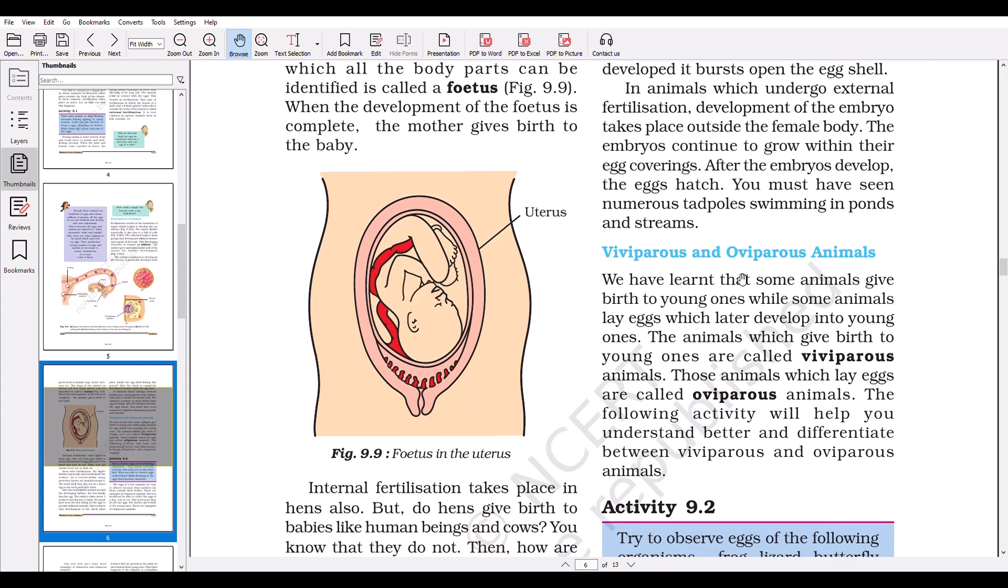Now, what are viviparous and oviparous animals? The animals which give birth to young ones are called viviparous animals. Those animals which lay eggs are called oviparous animals.